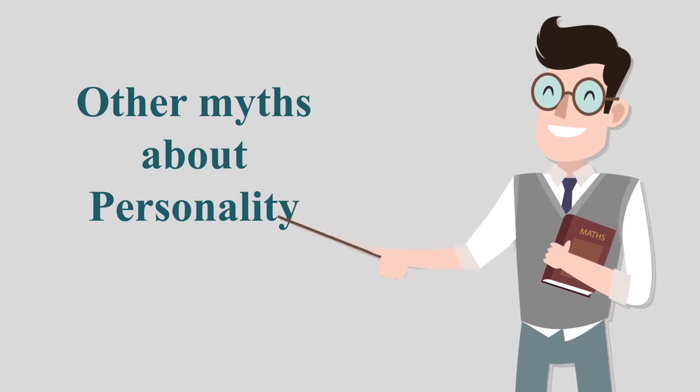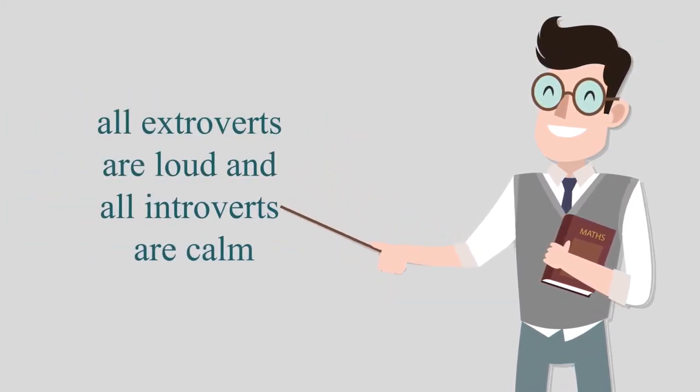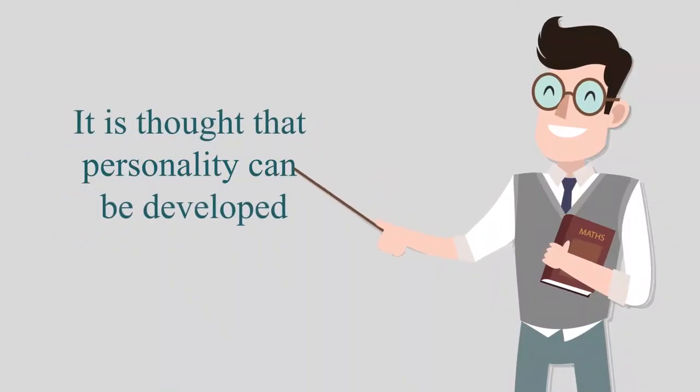Another misconception is that all extroverts are loud and all introverts are calm. Extroverts are energized from social climate and stimulus outside their body, and their motivation can decline with inactivity — they are seen as friendly, energetic and talkative. Another myth is that personality can be developed. A person's unique personality gets developed during childhood. With gradual unlearning and learning, modification in behavior can be done, but whether this modified behavior is sustainable is not clear, so temporary change in behavior may not be called personality development.